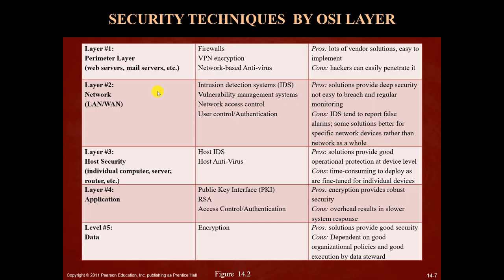At the level of the network itself within an organization — whether a local area network or wide area network — a lot of organizations have intrusion detection systems. Those systems listen to packets, monitor network traffic, and have patterns embedded to detect if something suspicious is happening and the network may be under a possible attack. Some organizations also employ vulnerability management systems — like scanners that look at your network and detect vulnerabilities. Network access control is used universally nowadays, requiring authentication before gaining access to a network.